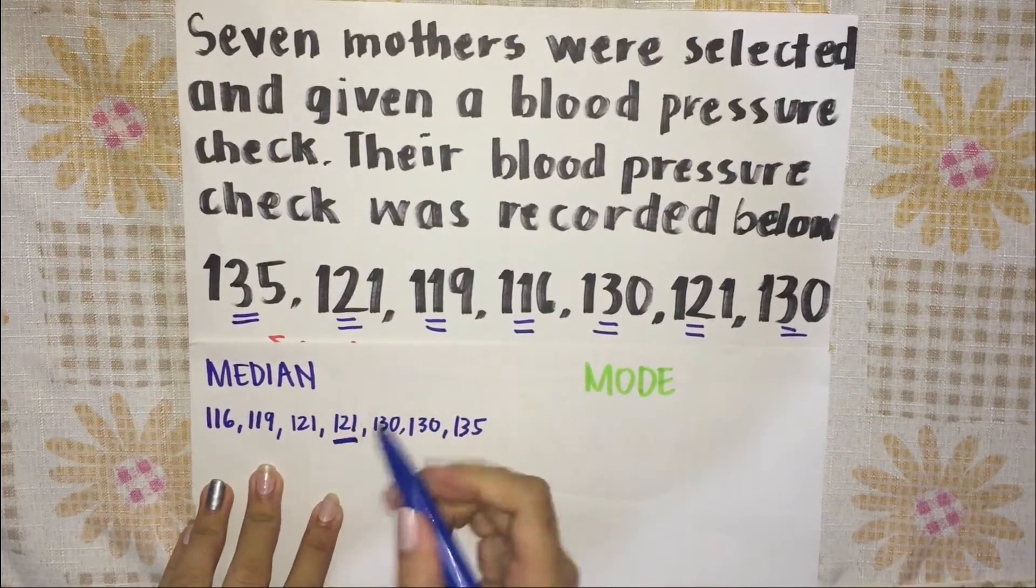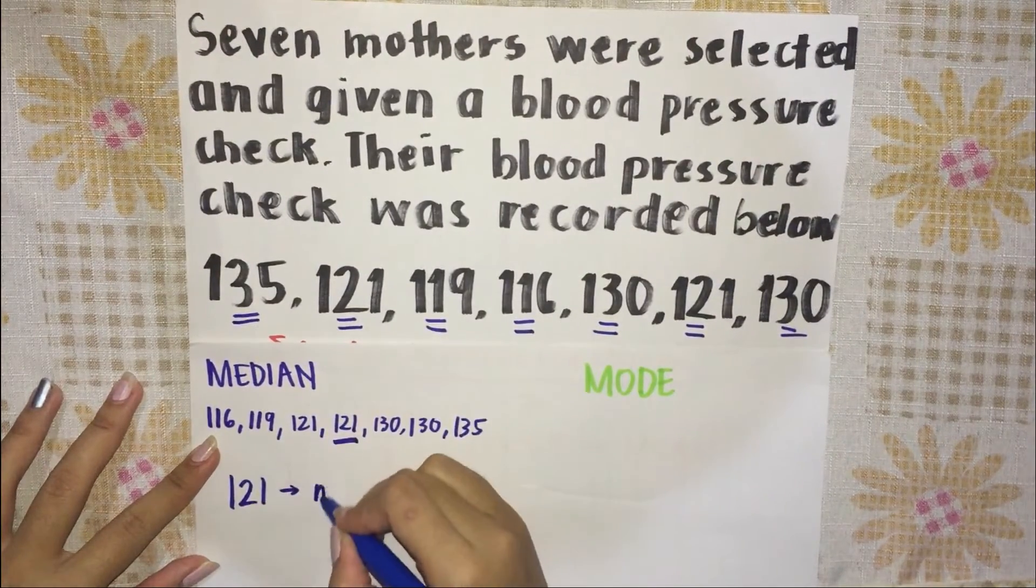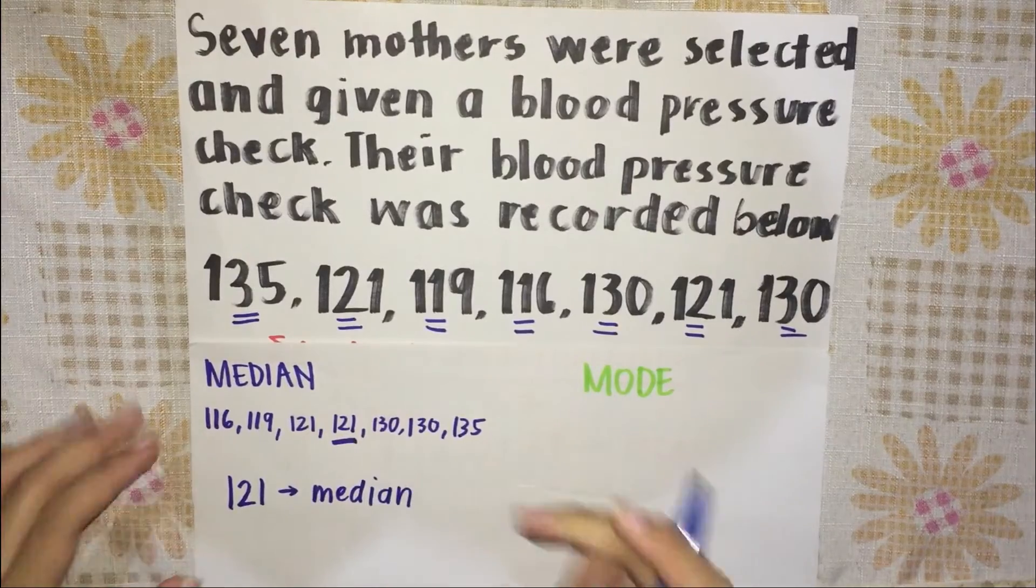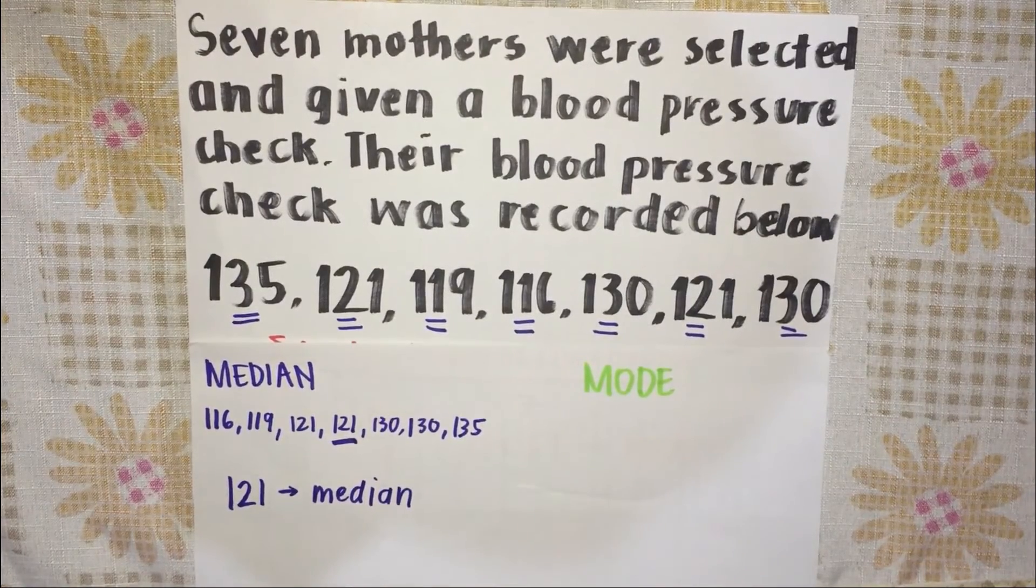Since the total number of the given data is odd, we would get the middle term, which is 121. Our median is 121.